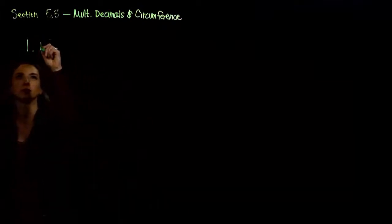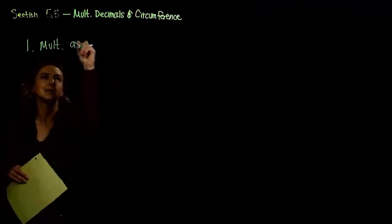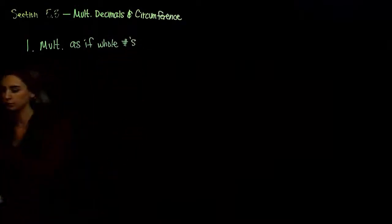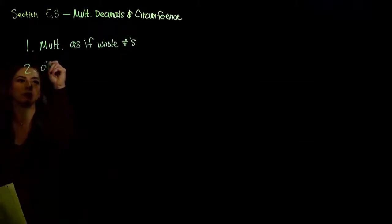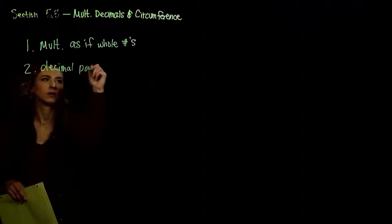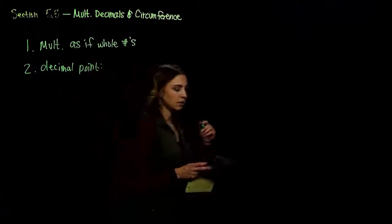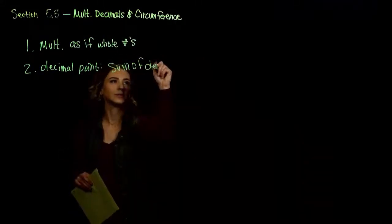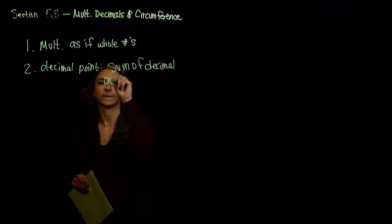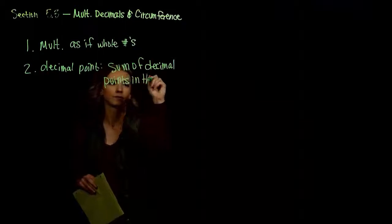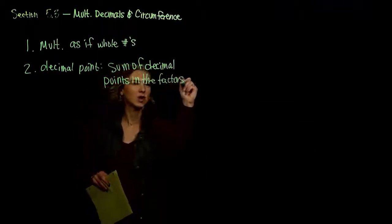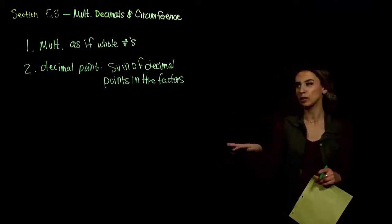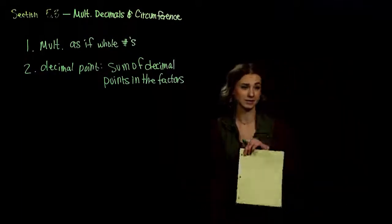What happens? First, we just want to multiply as if they're whole numbers, just like normal. And then in the end, where does our decimal point go? We want to move it the same number as the sum — adding together the sum of the decimal places in the factors. It sounds hard, but it's really not. It's just an extra step on top of multiplying. We just have to count the number of decimal places in each of the factors, add them together, and that's the same number that we move in.